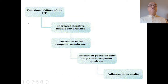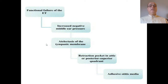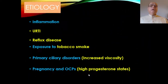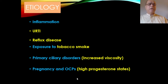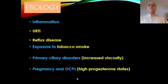When the Eustachian tube becomes blocked — functional failure of the Eustachian tube — its important function of ventilation of the middle ear is impaired. Due to that hindrance, there will be increased negative middle ear pressure, which can lead to atelectasis of the tympanic membrane and the middle ear cavity, leading to retraction pocket in the attic or posterosuperior quadrant, and there can be adhesive otitis media.